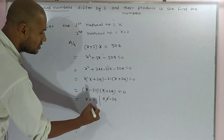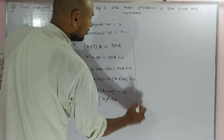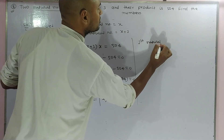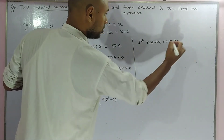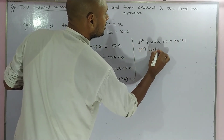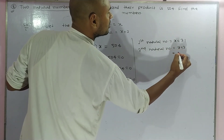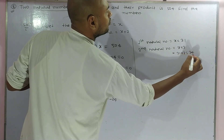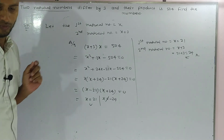Since the question asks for natural numbers, minus 24 is not a natural number, so it is not our answer. The answer is x equals 21. Therefore, the first natural number is 21, and the second natural number is x plus 3, which is 21 plus 3 equals 24. I think this is our answer. Thank you very much.